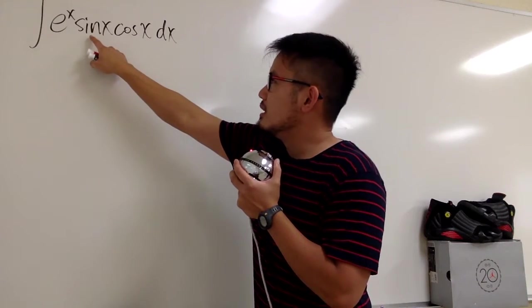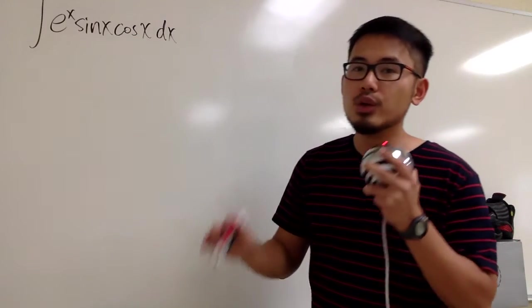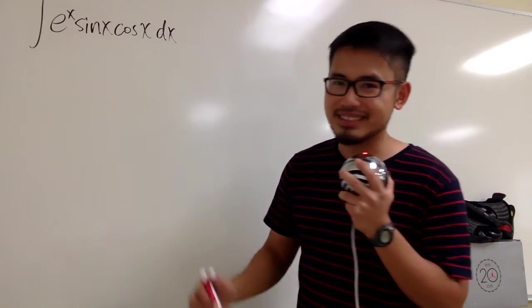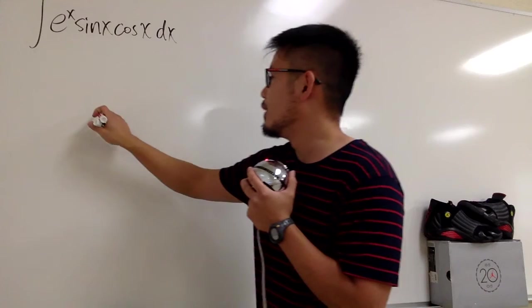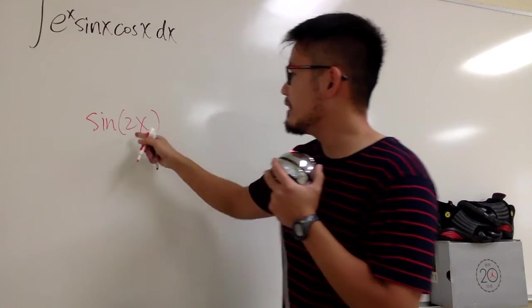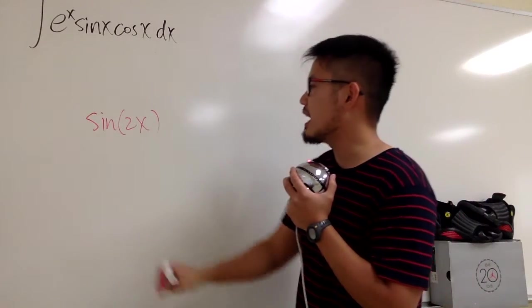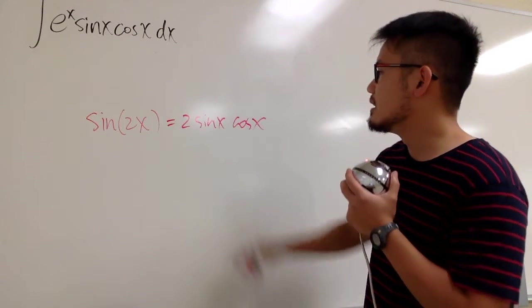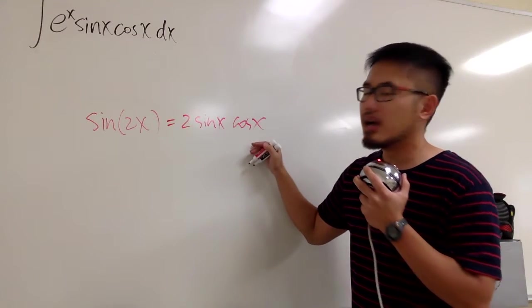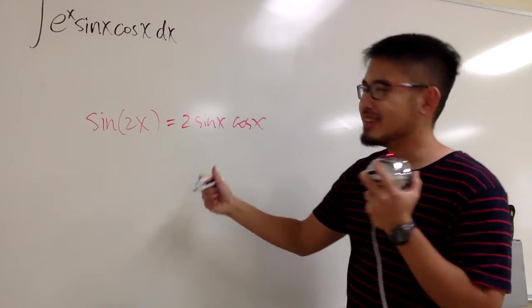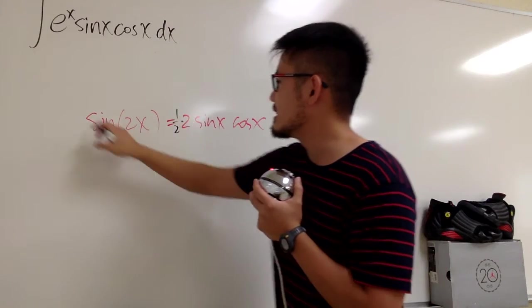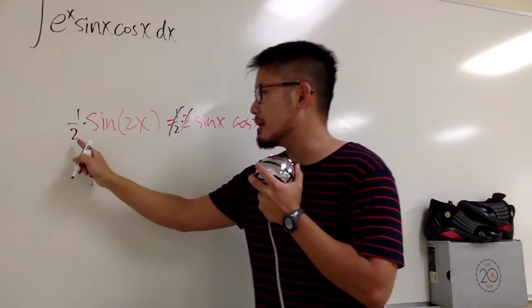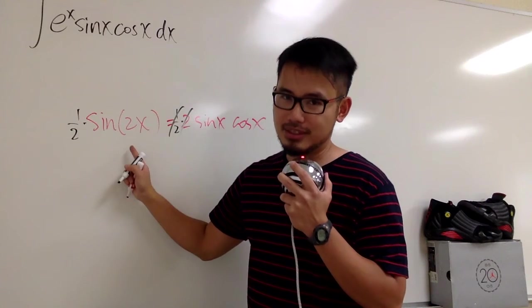Let's look at sine x times cosine x. Do we have an identity that involves sine x times cosine x? Yes — the double-angle formula for sine: sine of 2x equals 2 times sine x times cosine x. We can multiply both sides by 1 half, and then sine x times cosine x equals 1 half times sine of 2x.